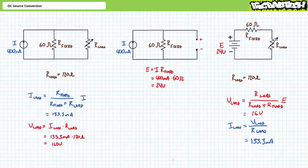Note when performing source conversion, it's important to maintain original polarity. Notice that the voltage source positive terminal is pointing up, as is the current source's directional arrow. By respecting polarity and direction, this ensures that the variable load resistance experiences the same direction of current flow for both configurations.